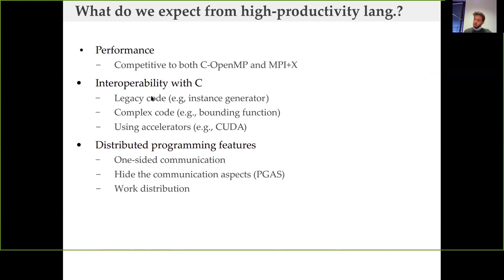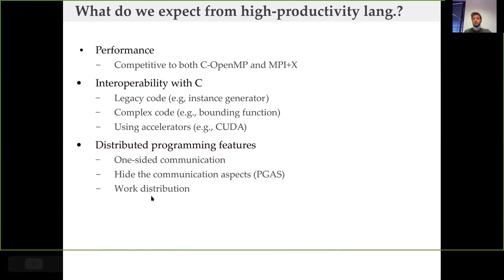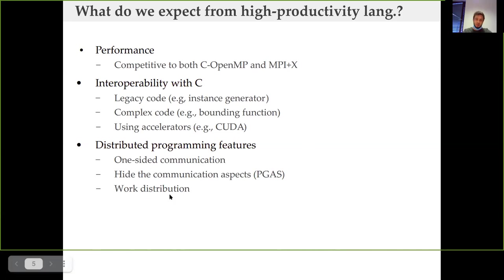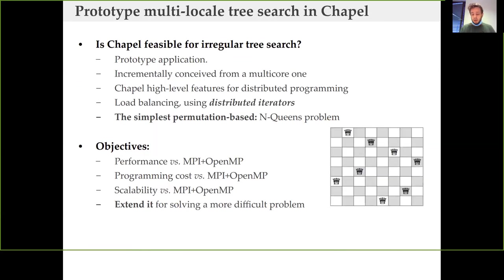I need C interoperability because we have some legacy code we don't want to change. We want to use accelerators such as GPUs, and we want distributed programming features such as one-sided communication — hiding aspects of the communication. PGAS is the answer for this, and we also want work distribution and load balancing because we are dealing with irregular applications. Chapel has all those features, so after some experimentation we started using Chapel.